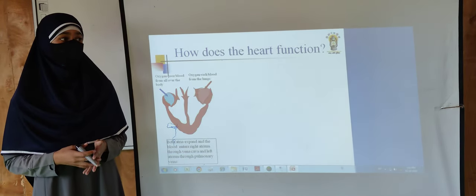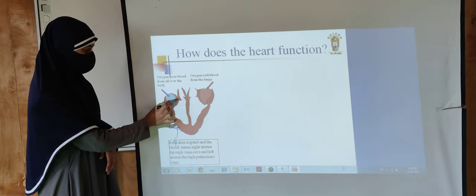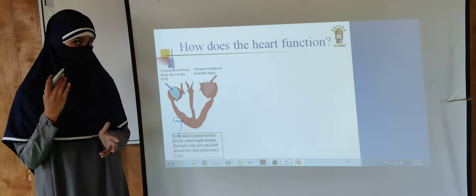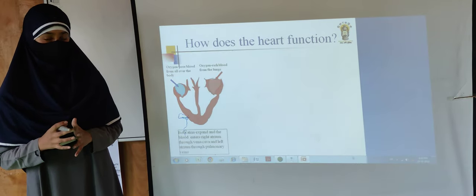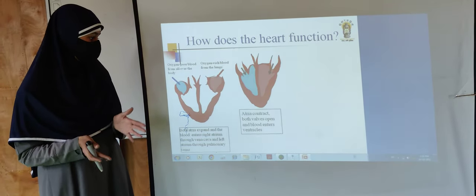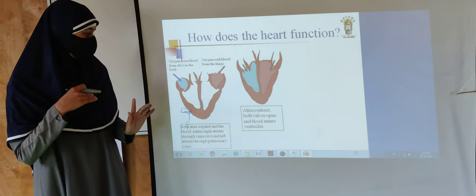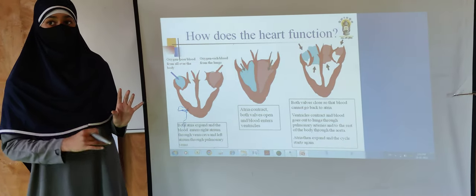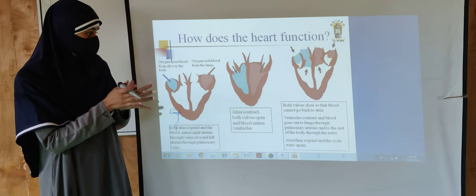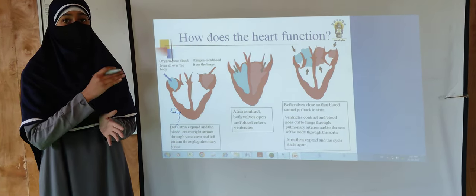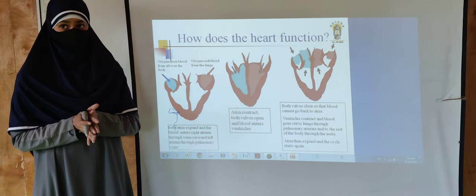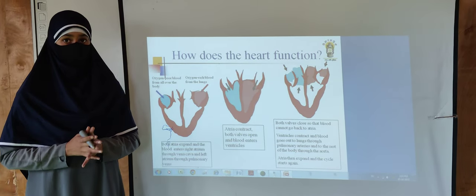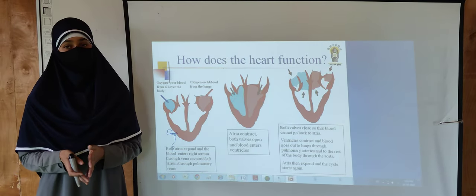Now let us see how our heart functions. Both the atria expand and blood enters the right atrium. The atria then contract and blood enters the right ventricle and the left ventricle. After blood enters both ventricles, the valves close so that blood cannot go back to the atria. The ventricles then contract and blood goes out to the lungs through the pulmonary artery, and to the rest of the body through the aorta. The atria then expand again and the cycle restarts.